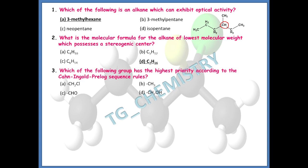The next question is: which of the following groups has the highest priority according to the Cahn-Ingold-Prelog sequence rules? In the CIP sequence rule, functional groups are arranged in order of priority when we assign R/S nomenclature to a chiral compound. The right answer is option A, that is CH2Cl.